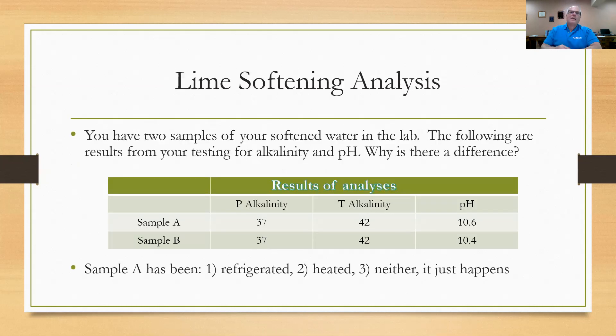All right, here's the lime softening analysis problem. They tell you that you have two samples of softened water in your lab. Following are results of your testing for alkalinity and pH. Why is there a difference? We look at the results of analysis and we have sample A and sample B. There's an alkalinity, phenolphthalein, there's a total alkalinity. In sample A, we have 37 and 42. In sample B, we have 37 and 42. The only difference is the pH of sample A is 10.6, sample B is 10.4. So they're asking you, sample A has been what? Refrigerated, heated, or neither? It just happens. Think about that for a little bit. Answer on the next slide.